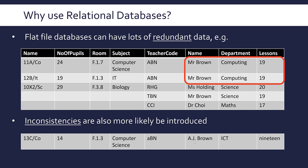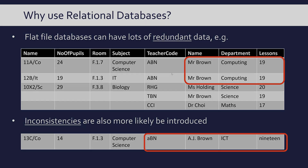So it's a good idea to keep things separate and use foreign keys and primary keys to link together distinct but related tables.